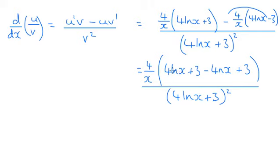You can see we've got a 4 ln x take away 4 ln x, so they're going to cancel. In this bracket here, we're left with a 6.